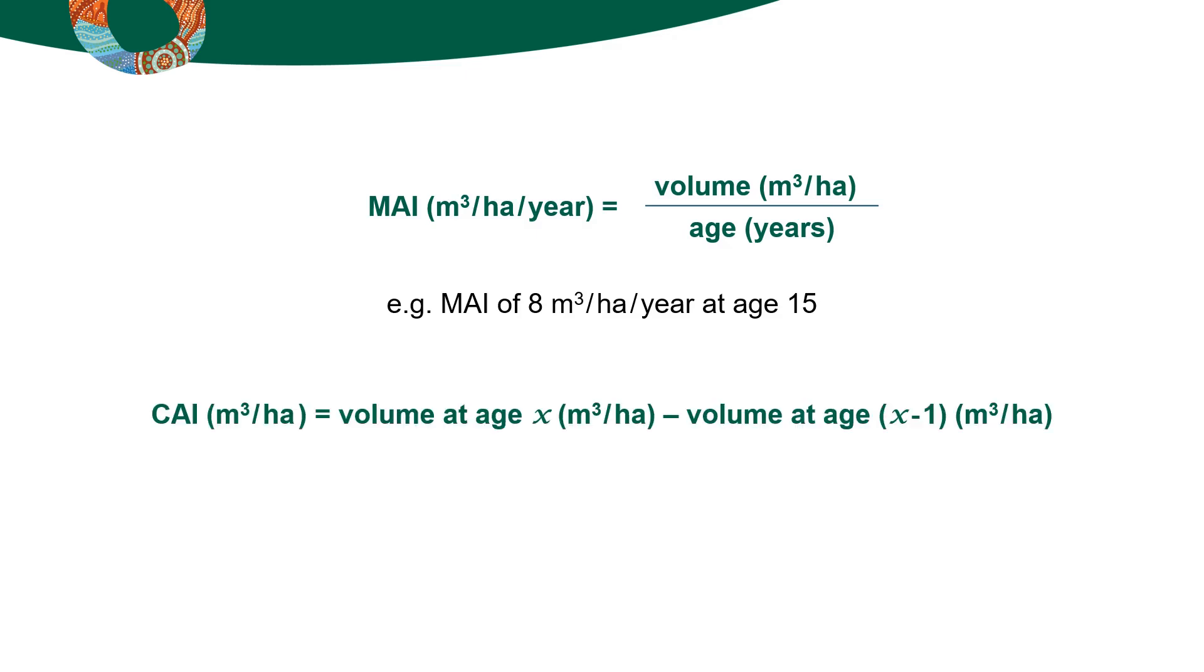CAI is the increase in volume over the period of one year. It is determined by subtracting the forest timber volume of one year from the following year's volume. When quoting CAI, you must also state the time frame to which it refers.